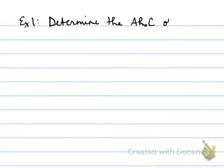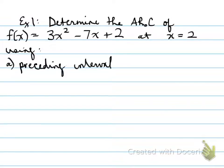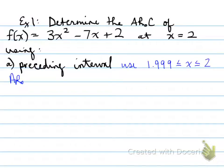Let's look at an example. Determine the average rate of change of f at x equals some function at x equals 2, using the preceding interval. Preceding means we're going to use the interval 1.999 to 2. The reason is we want to find the value before 2, so that it represents a preceding interval.